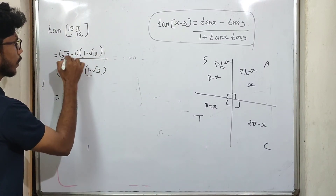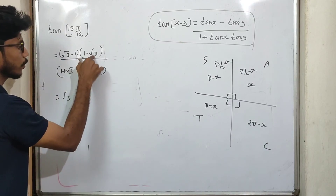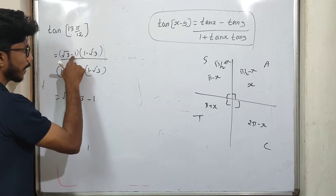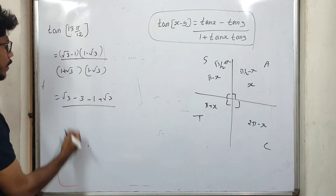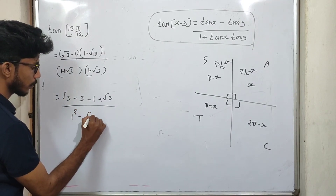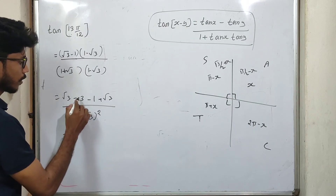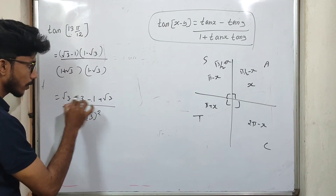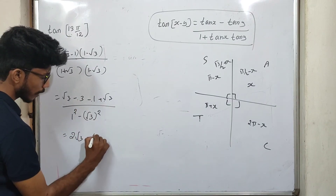Expanding: root 3 into 1 is root 3, root 3 into root 3 is 3, minus 1 into 1 is minus 1, minus 1 into minus root 3 is plus root 3. In the denominator, using (a plus b)(a minus b) equals a squared minus b squared: 1 squared minus root 3 squared gives 1 minus 3 equals minus 2. Numerator: root 3 plus root 3 is 2 root 3, minus 3 minus 1 is minus 4.